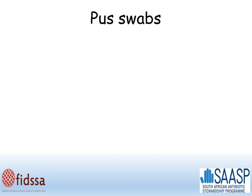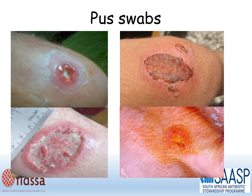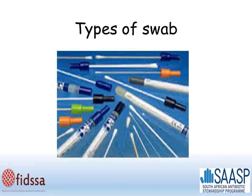Moving on to pus swabs. Wounds come in all different shapes and sizes — here are four examples — and it's important to use appropriate technique so that we get the most representative sample of organisms. Swabs also come in many different shapes and sizes. The ideal swab for a wound culture is one with a charcoal medium in the bottom, because this best preserves the organisms.